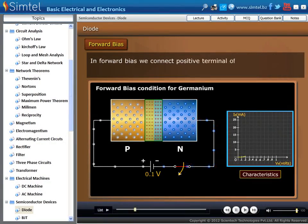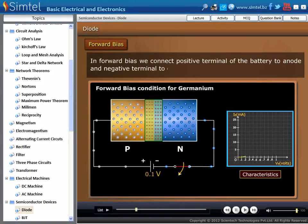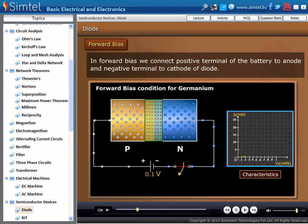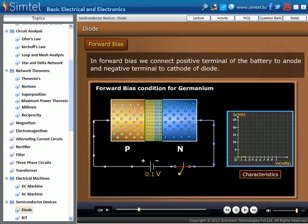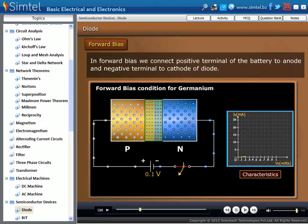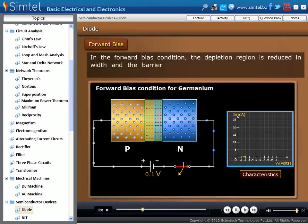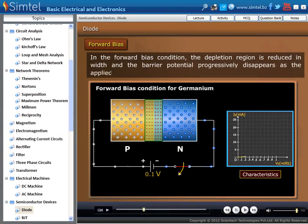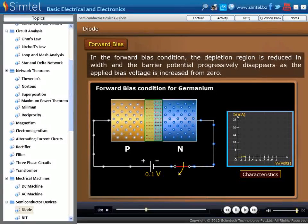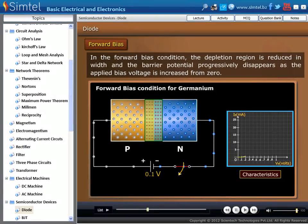In forward bias, we connect positive terminal of the battery to anode and negative terminal to cathode of diode. In the forward bias condition, the depletion region is reduced in width, and the barrier potential progressively disappears as the applied bias voltage is increased from zero.